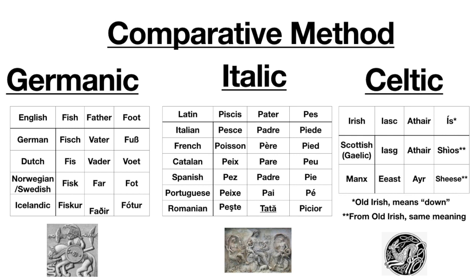But what do we see when we look at the Italic versions? In the Italic versions — in words that come from Latin and Latin itself — we can see that all these words begin with a 'p' sound. In Latin I have piscis, pater, and pesse. In Italian I have pesce, padre, and piede. In French I have poisson, père, and pied. And so on and so forth.